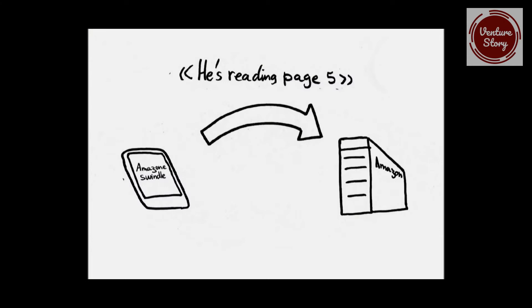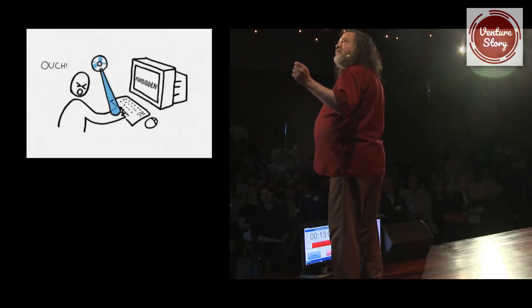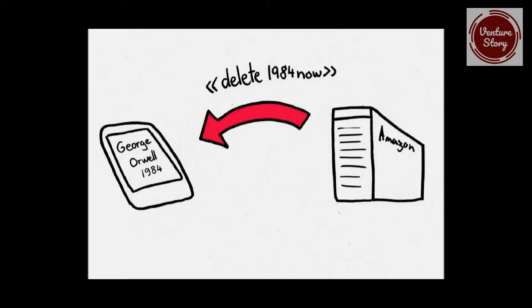When you've got proprietary software, what happens? Sometimes the program snoops on the user. Sometimes it tracks the user. Sometimes it restricts the user and stops users from doing what they want to do. You can see that the Blu-ray is your enemy. Sometimes the software remotely deletes books, as Amazon did with 1984.